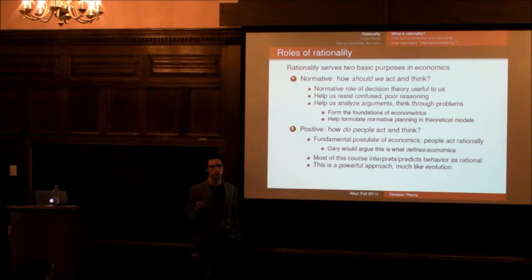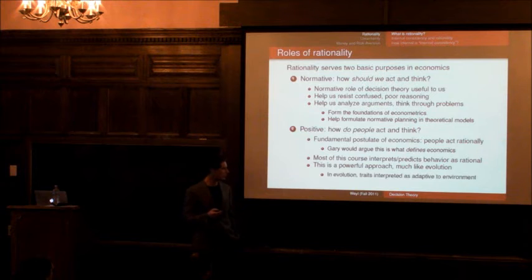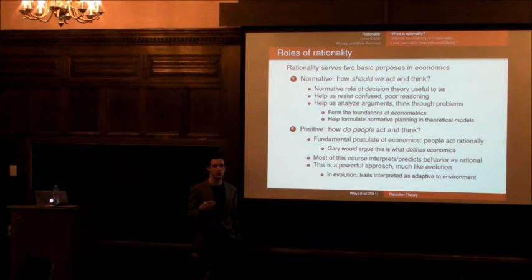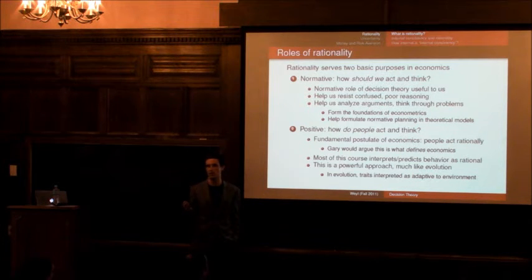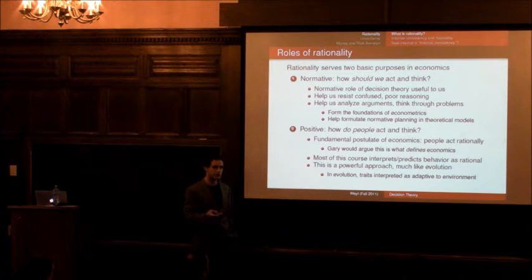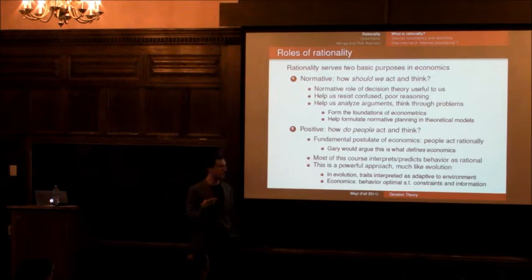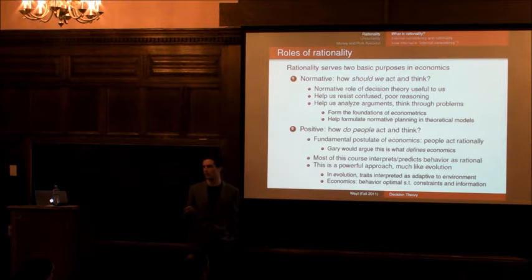So during most of the course, we're going to interpret or predict behavior on the basis of an assumption that that behavior is rational in some sense. And this is quite a powerful approach. It's actually very similar in spirit to evolution. So what is evolution? It's basically the idea that we interpret the traits that we observe in different species as adaptive to some environment in which we view them as living. And really, economics is just the same idea. It's that behavior is optimal given the constraints and information that's fixed.